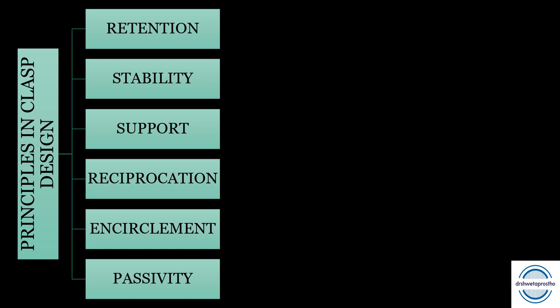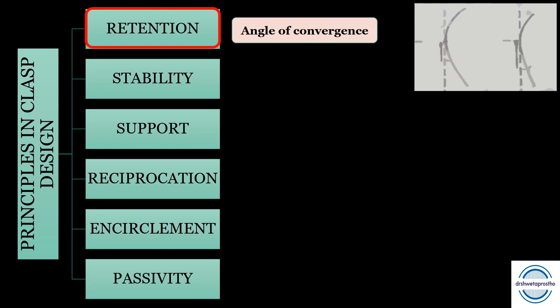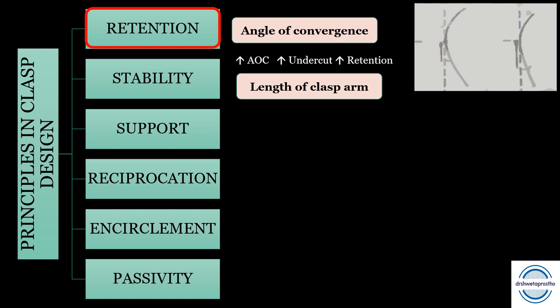Principles of clasp design — a very important topic for MCQs: retention, stability, support, reciprocation, encirclement, and passivity. Starting with retention: the first factor is the angle of convergence, which is a tooth factor. It is the apical angle formed between the height of contour and the surveyor blade. An increased angle of convergence means increased undercut and thus increased retention given by the clasp.